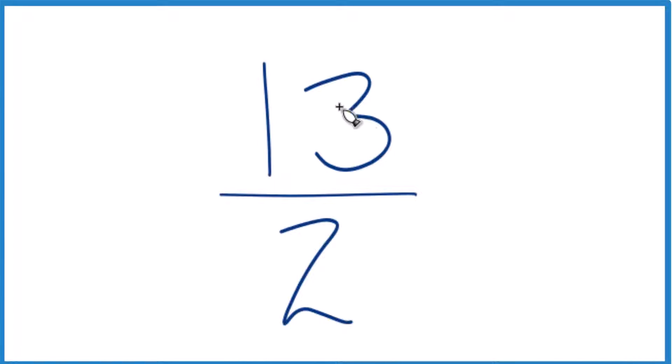Let's see if we can figure out what 13 over 2, the fraction 13 over 2, is in decimal form. So basically we're going to divide 13 by 2.